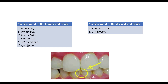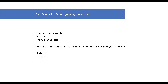Species of Capnocytophaga found in dogs and cats' mouths are C. canimorsus and C. cynodegmi. Capnocytophaga canimorsus is responsible for most human infections. The risk factors for Capnocytophaga infection are: dog bite or cat scratch, asplenia, heavy alcohol use, immunocompromised state including chemotherapy, use of biologics and HIV. Other reported risk factors are cirrhosis and diabetes.